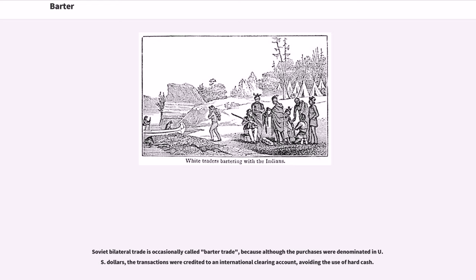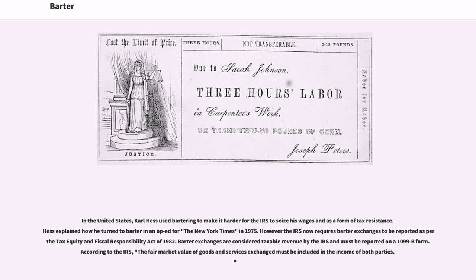Soviet bilateral trade is occasionally called barter trade, because although the purchases were denominated in U.S. dollars, the transactions were credited to an international clearing account, avoiding the use of hard cash. In the United States, Carl Hess used bartering to make it harder for the IRS to seize his wages and as a form of tax resistance. Hess explained how he turned to barter in an op-ed for the New York Times in 1975.